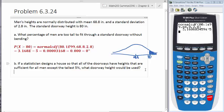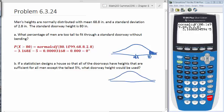Let's go to the next problem. If a statistician designs a house so that the doorways have heights that are sufficient for all men except the tallest 5%, what doorway height should we use? So for this problem, if we continue to use the normal distribution, we get 68.8. We want the tallest 5%, so this is the tall end over here.